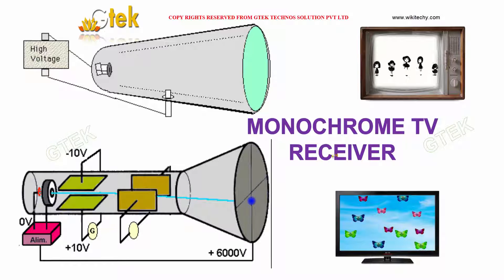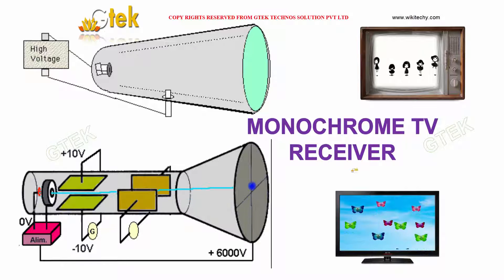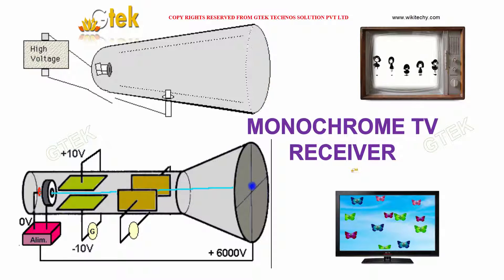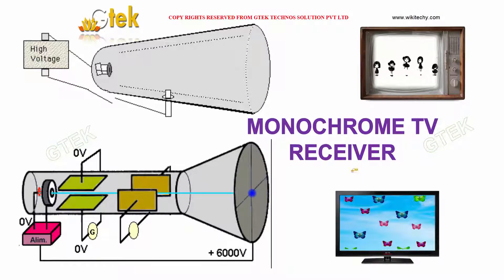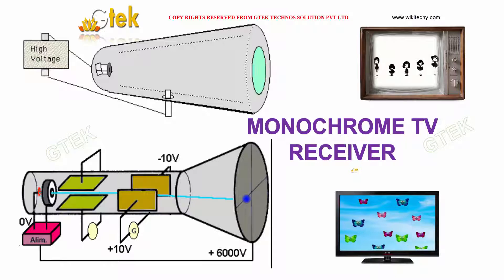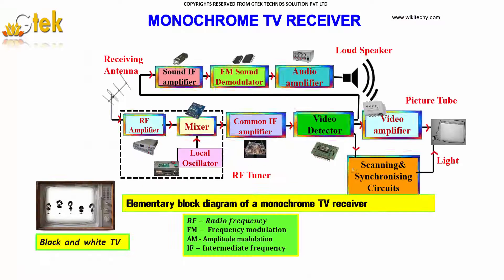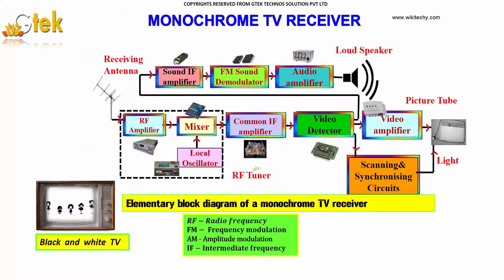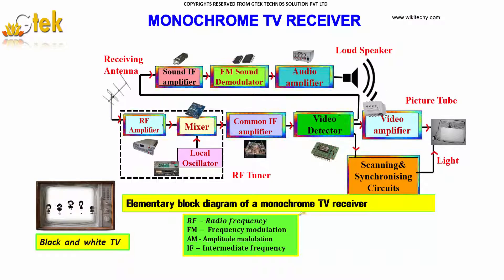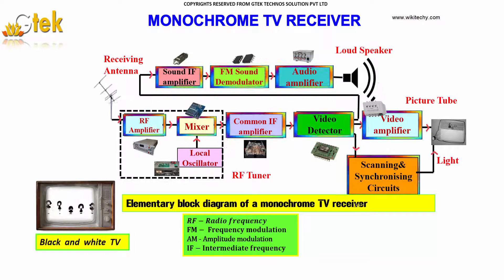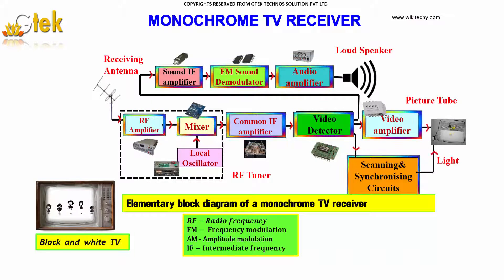Now, we will look into the monochrome TV receiver and how the TV receiving is happening. Here is the block diagram of a monochrome TV receiver. Here is the picture tube or TV.